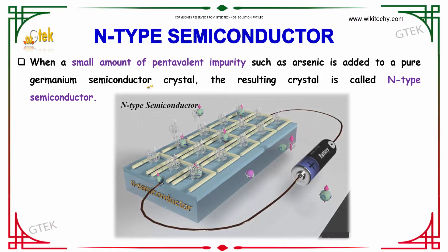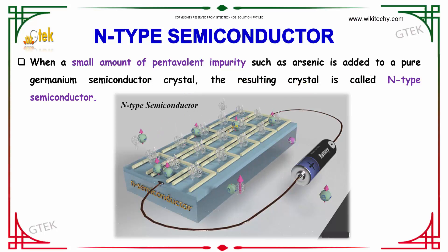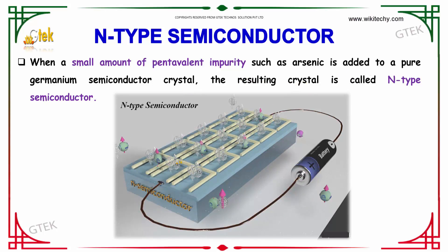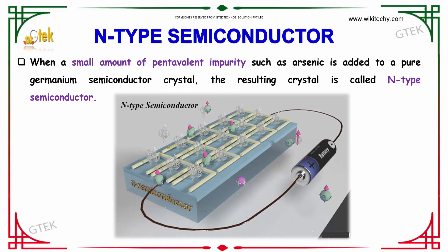When a small amount of pentavalent impurity such as arsenic is added to a pure germanium semiconductor crystal, the resulting crystal is called an N-type semiconductor.